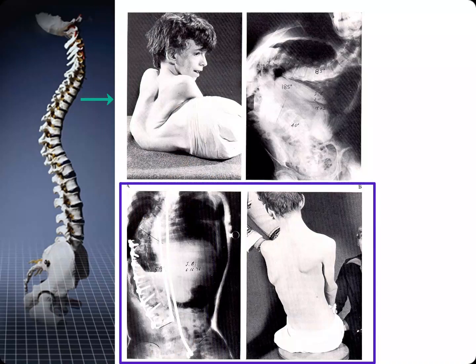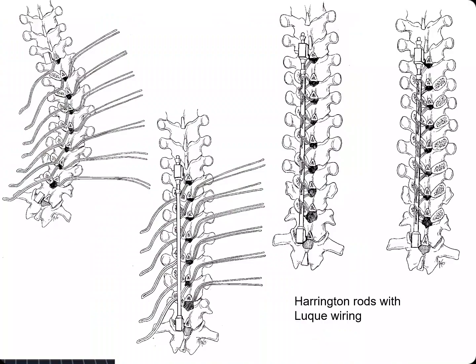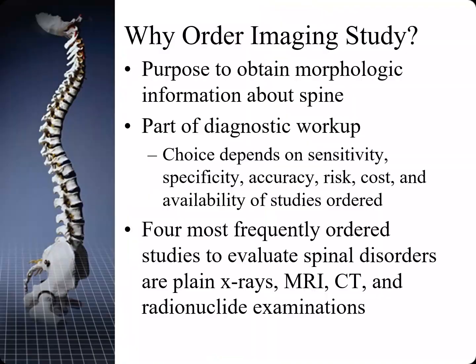This series demonstrates a child with severe scoliosis that has been repaired with Harrington rods going up the spine. This graphic demonstrates the utilization of Harrington rods.